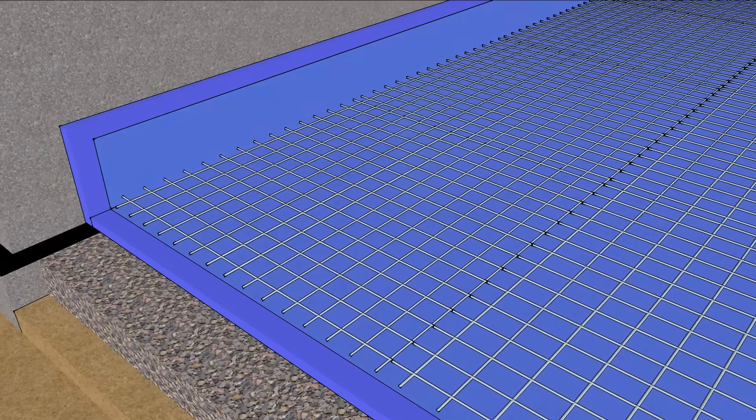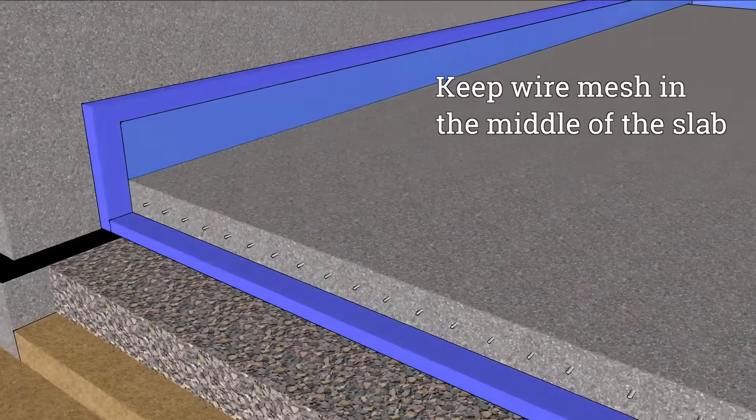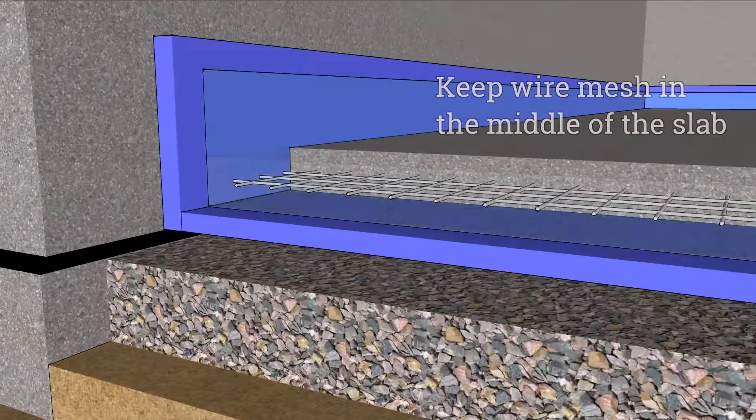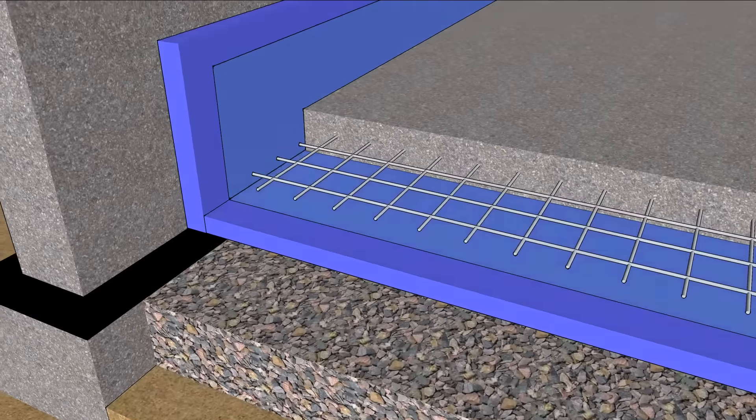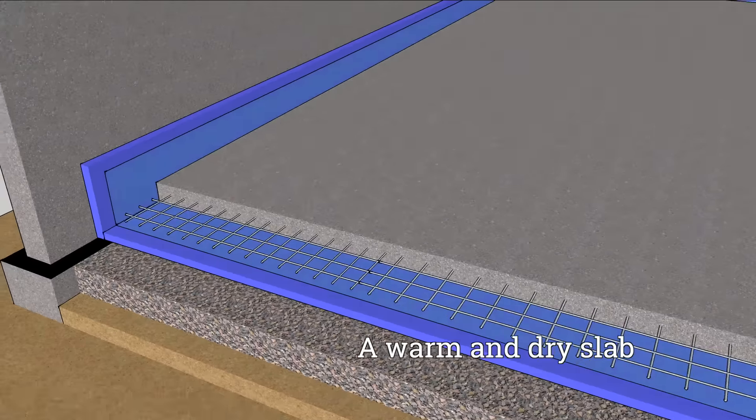As you pour the concrete, make sure that the wire mesh ends up in the middle of the slab. Capillary breaks, continuous insulation, and plastic will make a warm, dry floor for basement living space.